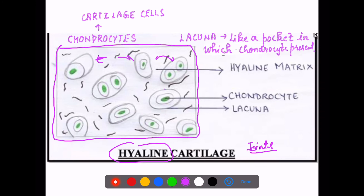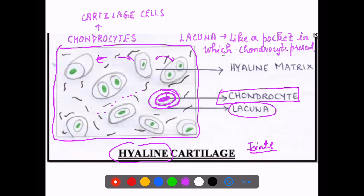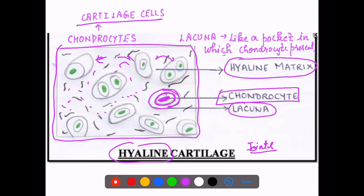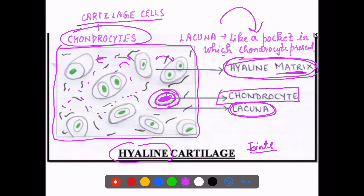This structure is hyaline cartilage, which is usually found in joints. The structure of cartilage: imagine a pocket in your shirt. That pocket is called lacuna, and in this pocket we place cells called chondrocytes. These chondrocytes sit in the lacuna. The pocket itself — the material it is made of — is the matrix called hyaline matrix. So cartilage cells are known as chondrocytes, placed in pockets called lacuna, embedded in hyaline matrix.